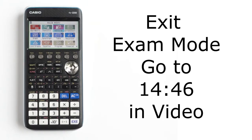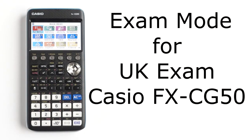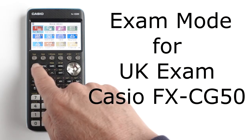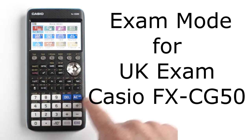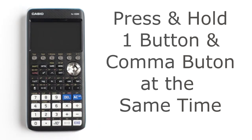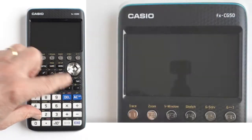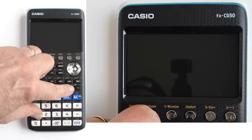How do I go into exam mode for the UK exam on the Casio FX-CG50? First, you need to turn off the calculator by pressing the shift button, then the blue AC on button. Then with your left hand, press and hold the 1 button and the comma button at the same time. While holding those two buttons, long press the blue AC on button.